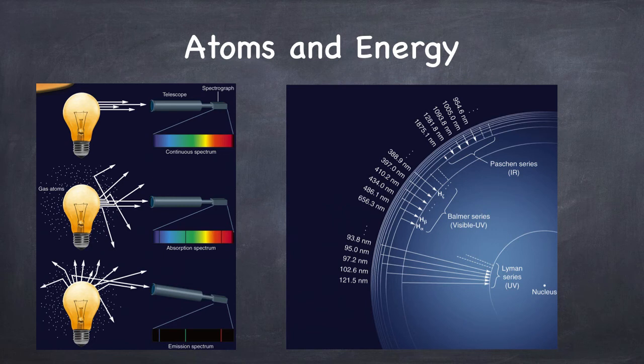The Lyman series, the ones we talked about earlier that end in n equals 1, are all in the UV. And the Paschen series are the ones that end in n equals 3. And those guys, as you can see, are all in the infrared. So the only visible part of the hydrogen spectrum is the part of the spectrum where the electrons start in a state n equals 3, n equals 4, n equals 5, and land in n equals 2.